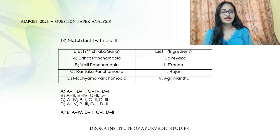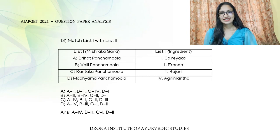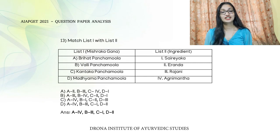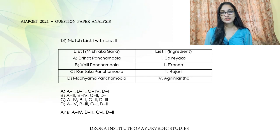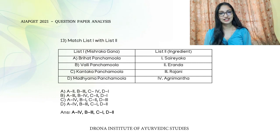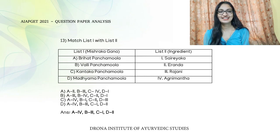Kanthaka Panchamula includes Karamardhi, Trikantaka, Sairayaka, Shatavari, and Gridranaki — so Sairayaka is an ingredient. Madhyama Panchamula includes Bhala, Punarnava, Erenda, Supyaparni, and Dwayenaccha — so Erenda is an ingredient of Madhyama Panchamula.